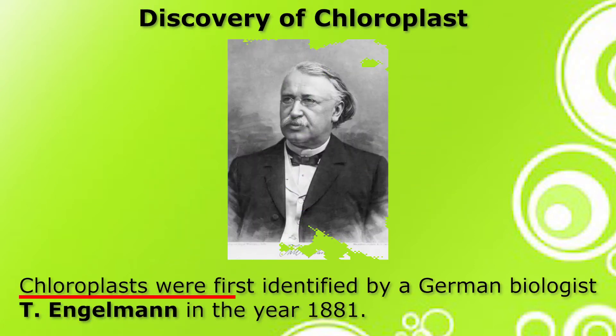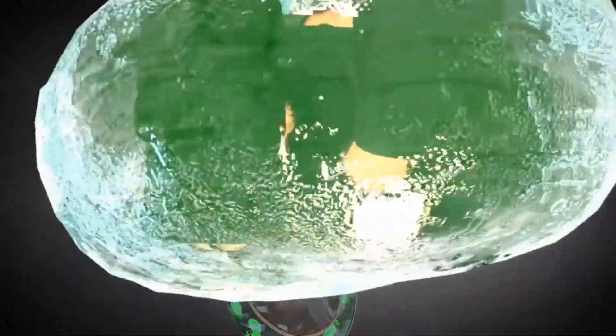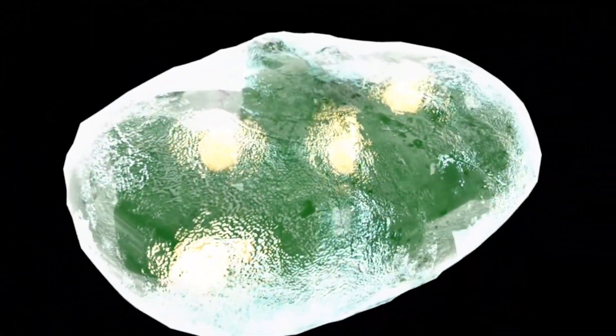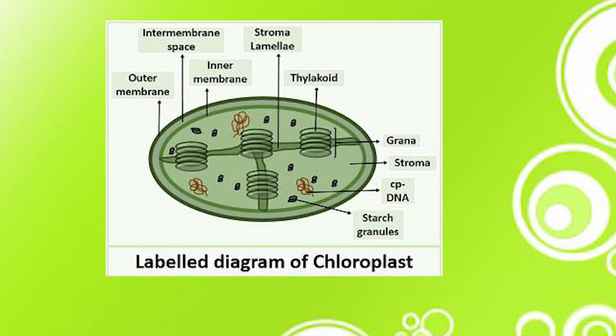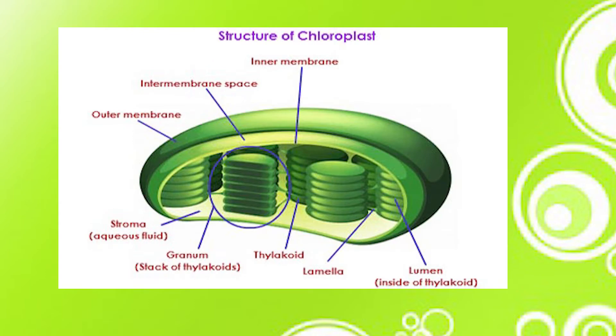Chloroplasts were first identified by German biologist T. Engelmann in the year 1881. These chloroplasts generate metabolic energy and contain their own genetic material. The electron microscopy studies reveal that chloroplasts are bounded by a double membranous lipoproteinous structure called the chloroplast envelope.